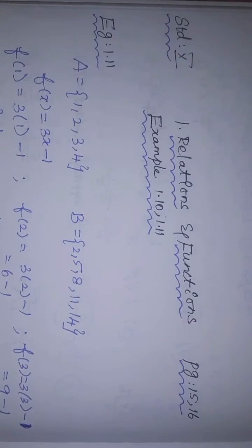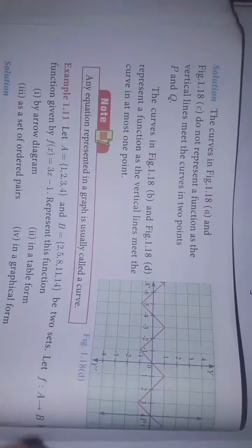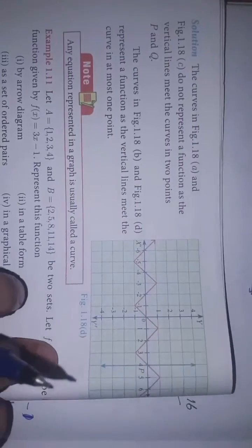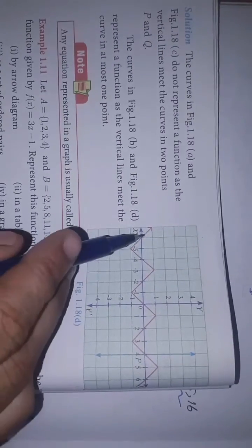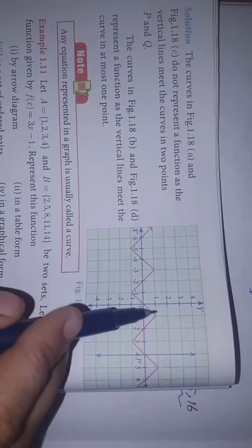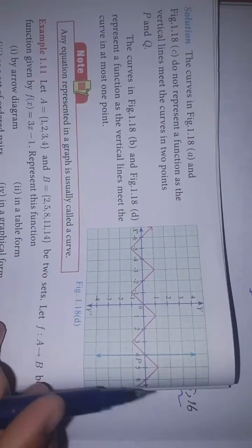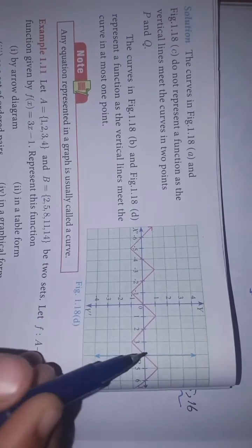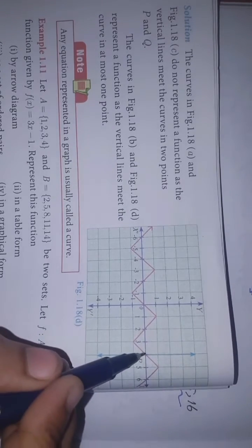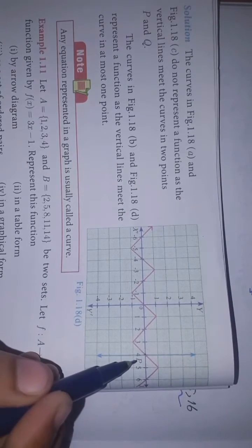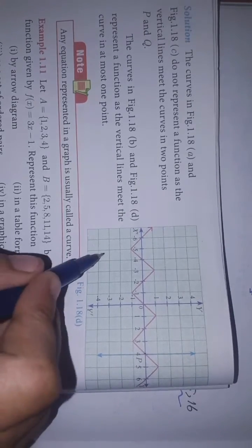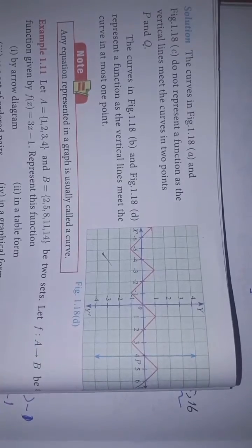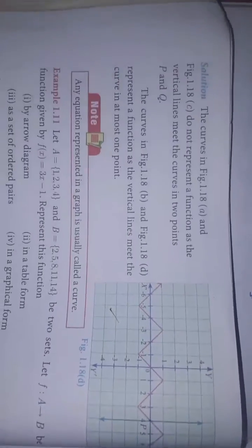Next is option D, subdivision D. We have a vertical line, and we know that there is only one point. So this is also a function.